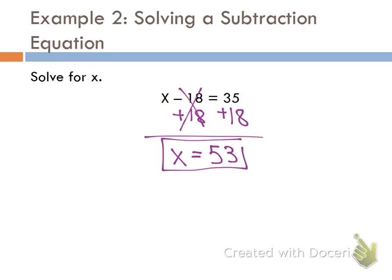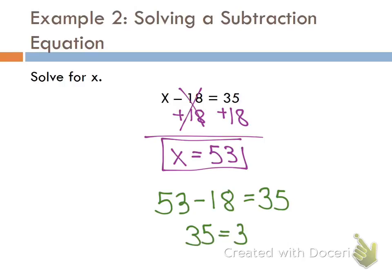x equals 53. Am I done? No — I go back and plug in 53 where x is in the original equation: 53 minus 18 equals 35. Work it out in your calculator — if it's not 35, you know your answer is wrong. What is 53 minus 18? 35. So yes, 35 equals 35 — it checks out. Box the checked answer.